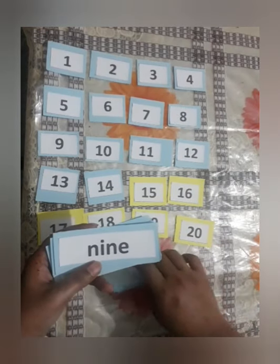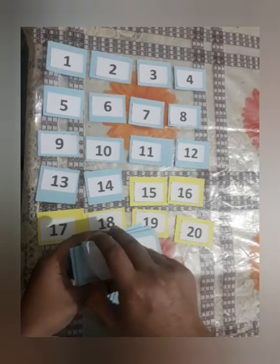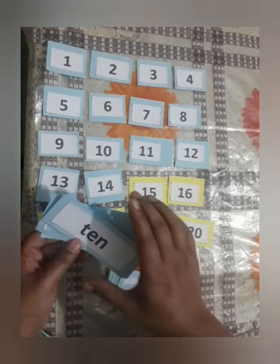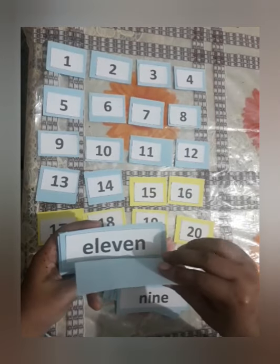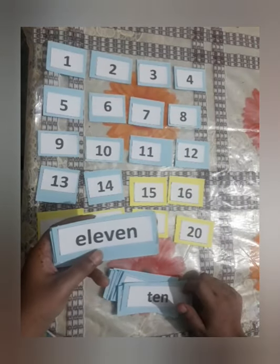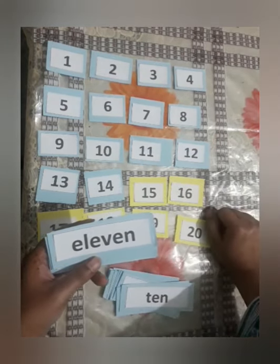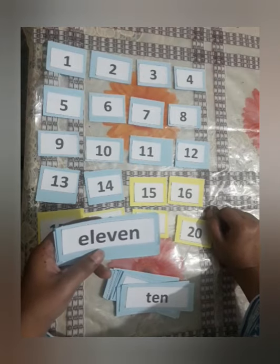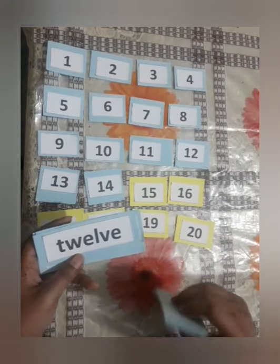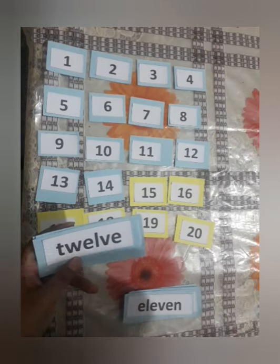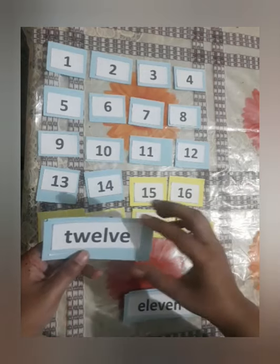Number 9: N, I, N, E — Nine. Number 10: D, E, N — Ten. What comes after number 10? 11. Spelling of 11 is E, L, E, V, E, N — Eleven. What comes after 11? 12. Spelling of 12: T, W, E, L, V, E — Twelve.